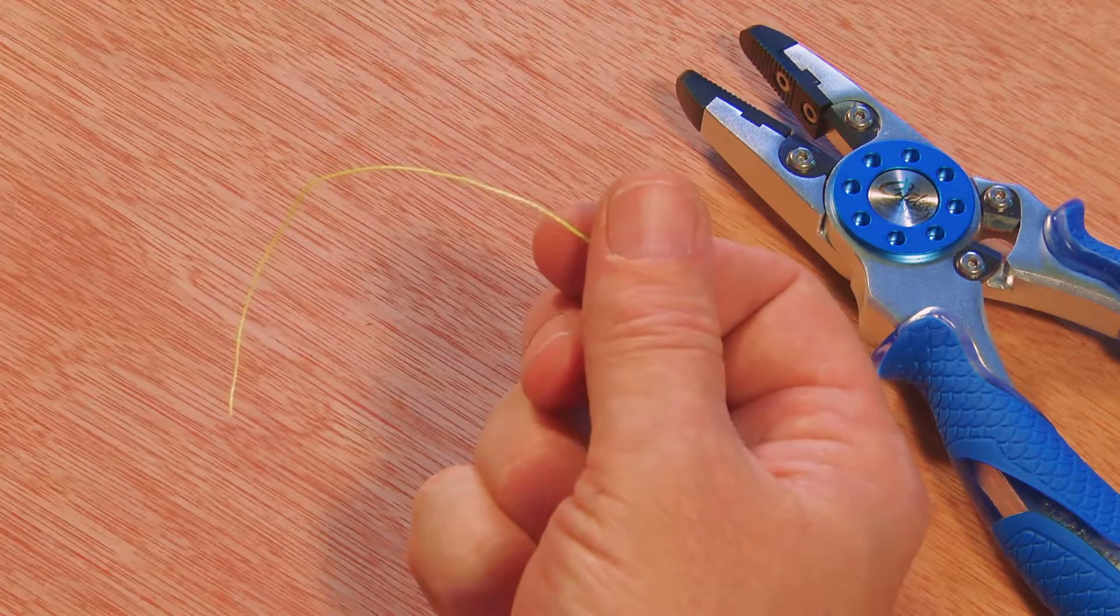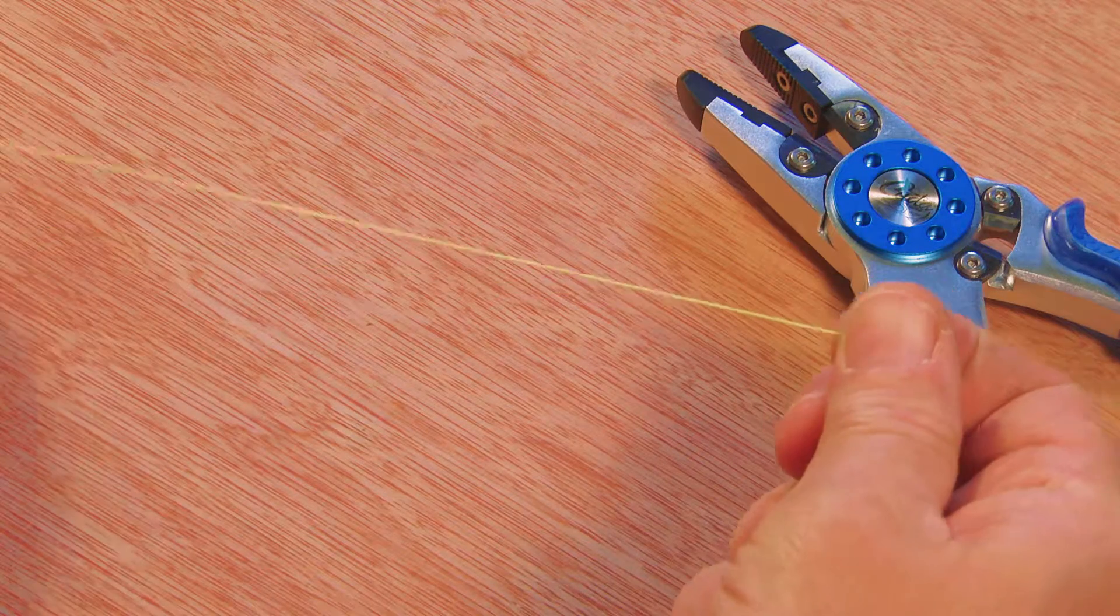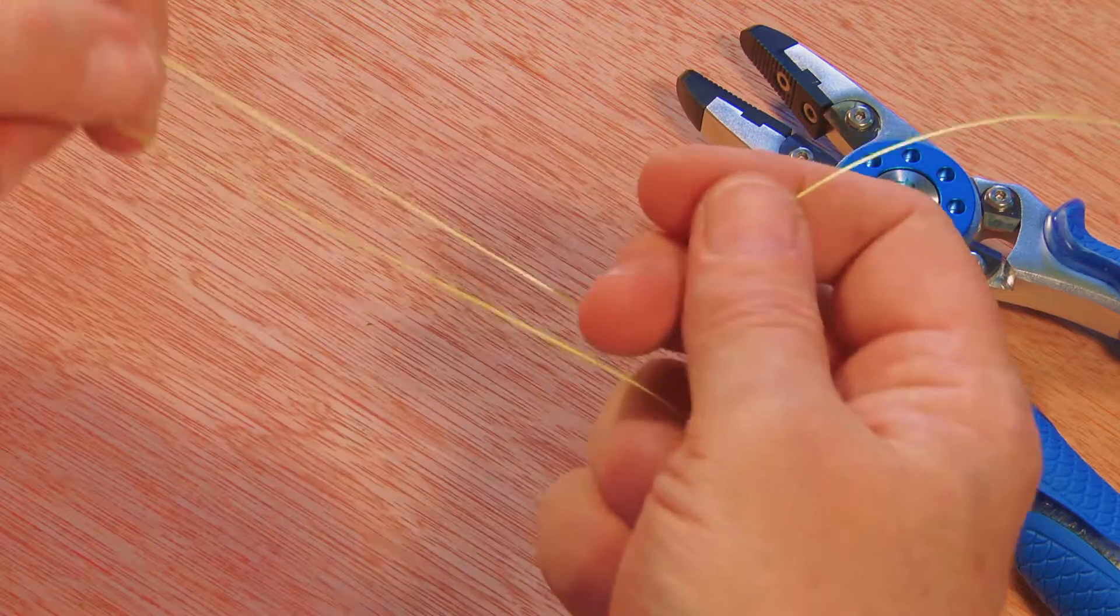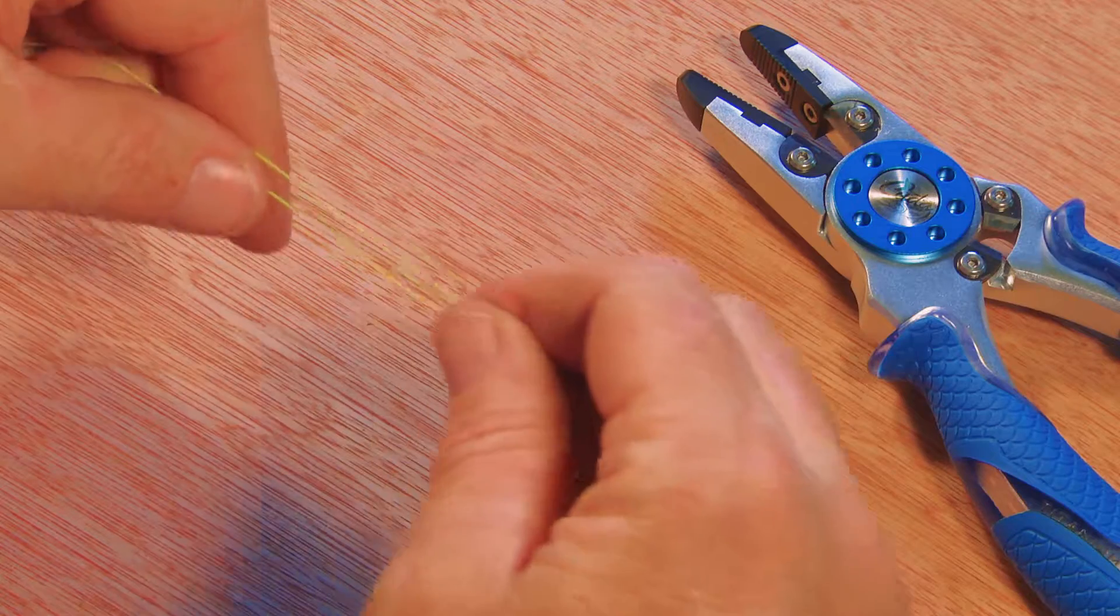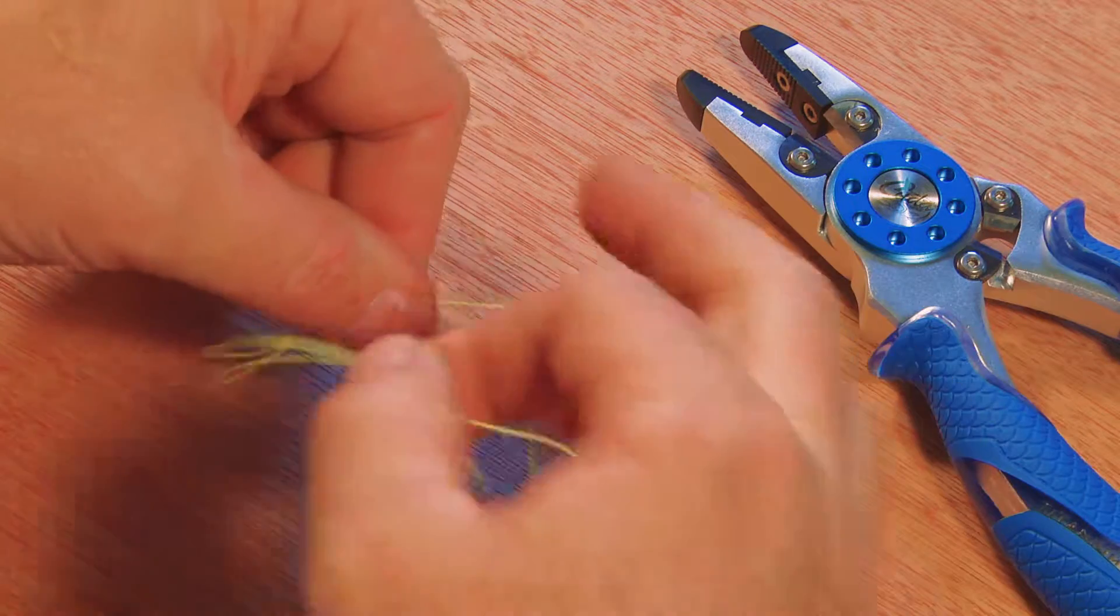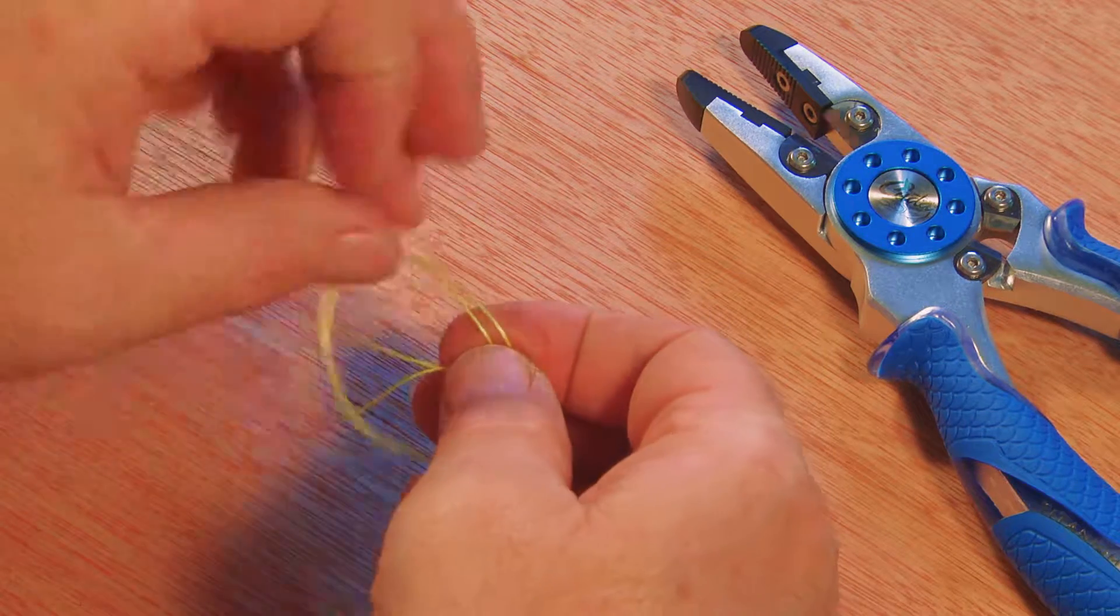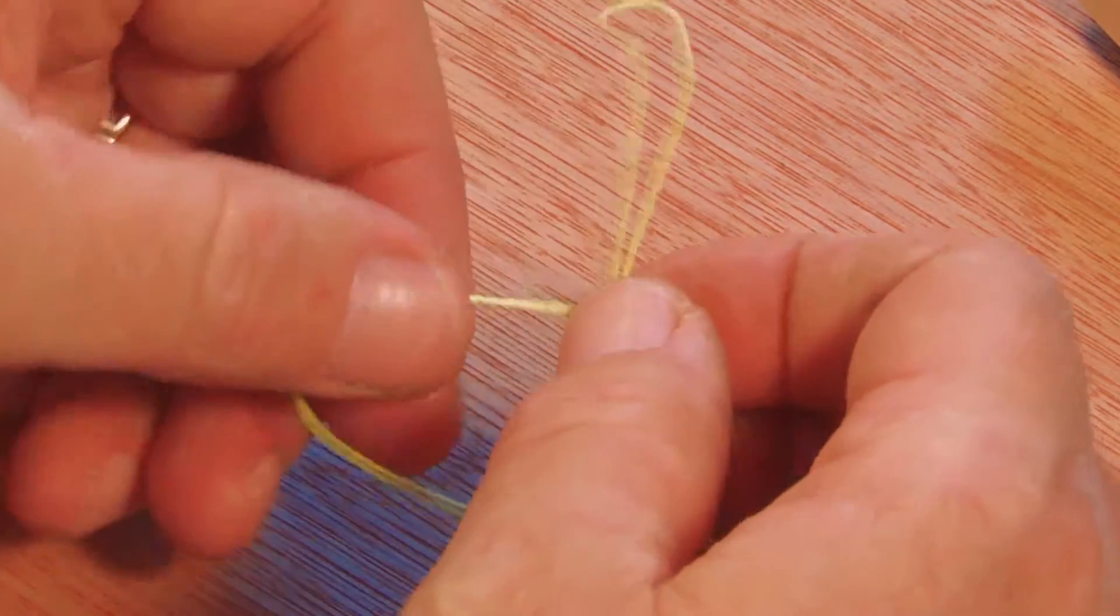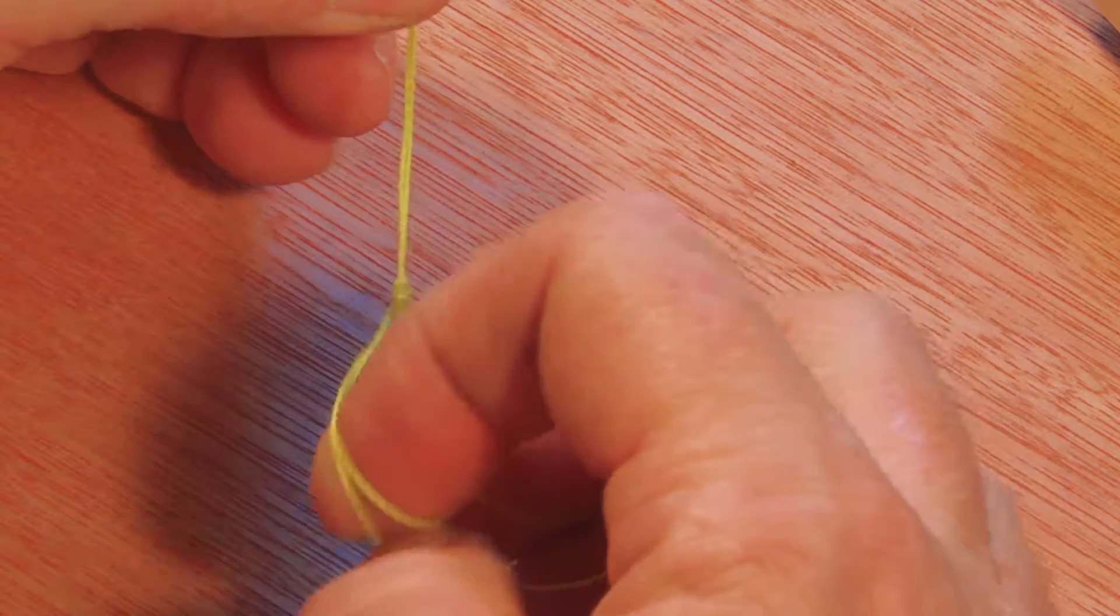I'm going to put the monofilament aside for just a second and create a doubled line with the braid. Pull a little bit out and double it back on itself like so. And then I'm going to tie just a series of overhand knots. Make a loop like that. And then one, two, three overhand knots. And pull it tight.